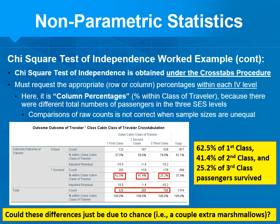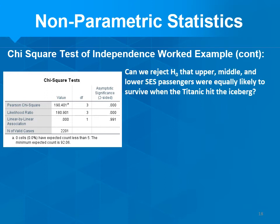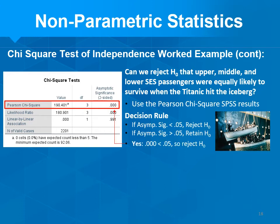Here's our actual chi-square test of independence output. The Pearson chi-square row is the one we want. Can we reject the null that upper, middle, and lower SES passengers were equally likely to survive? Our decision rule: if asymptotic sig is less than 0.05, reject the null. The p-value is essentially zero — clearly less than 0.05 — so we reject the null. There is a relationship between SES and survival; they are not independent.